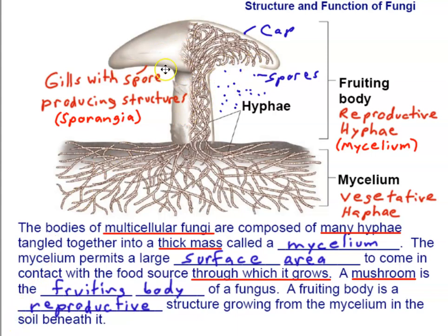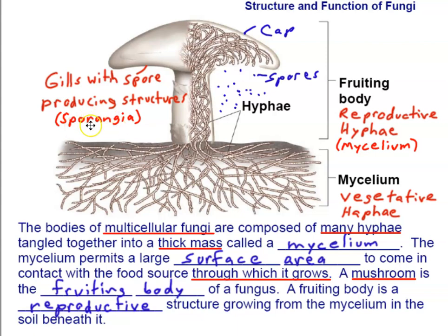If you look at the underside of a toadstool or mushroom, you'll notice structures that look like fish gills — that's why we call them gills. But they're not for gas exchange; they're lined with spore-producing structures known as sporangia. Sporangia is another vocabulary term for spore-producing structures, and this isn't the first time we've seen it — we also encountered it when studying Kingdom Protista, including the fungus-like protists.